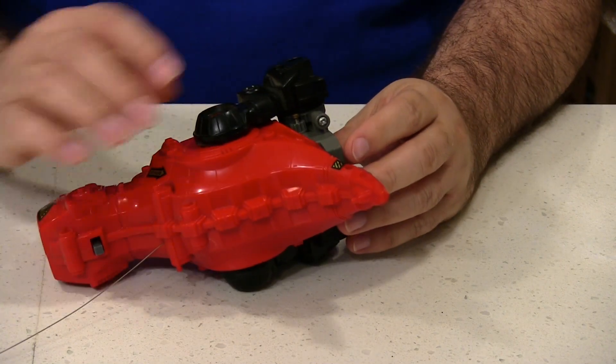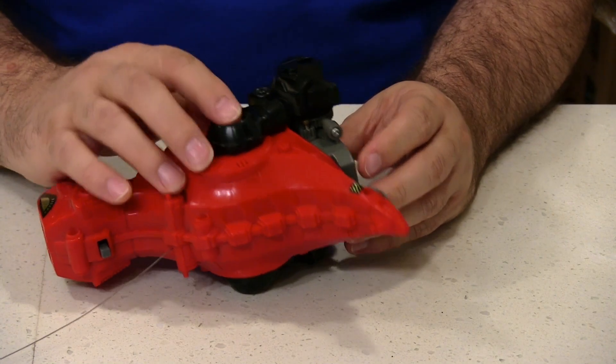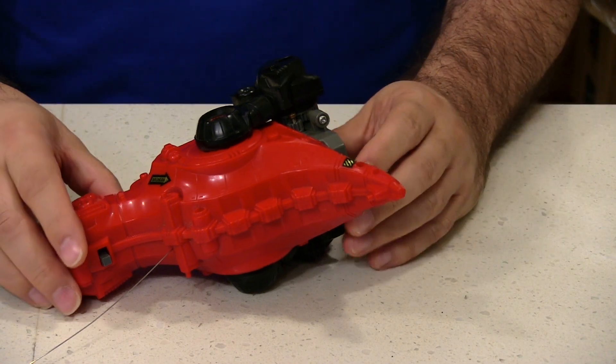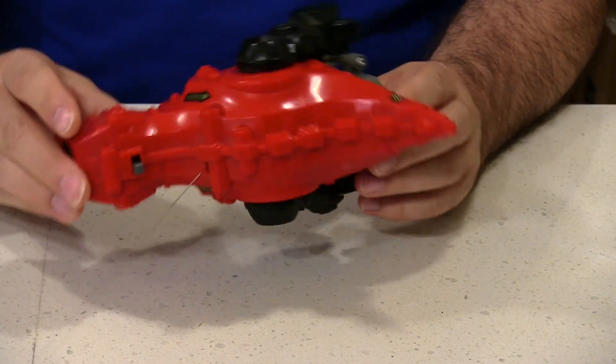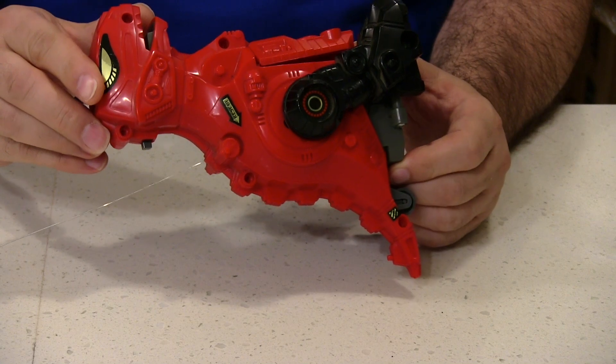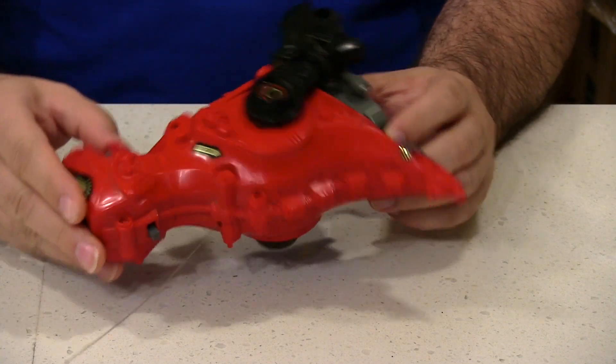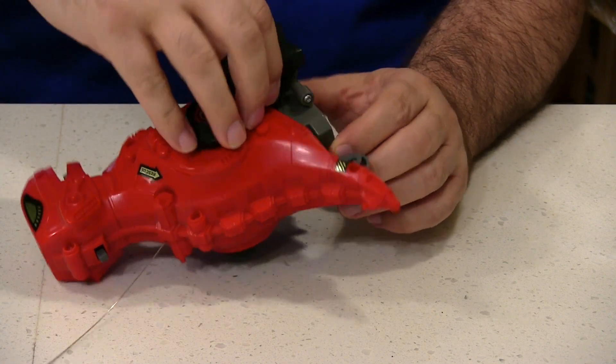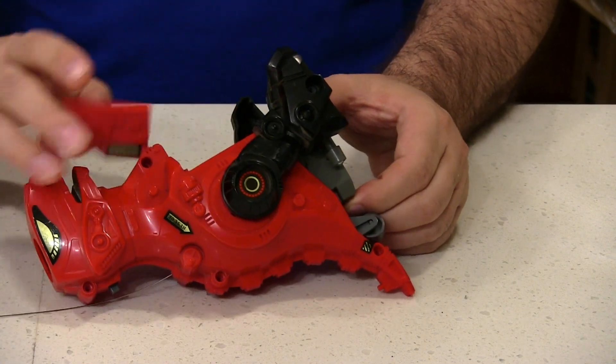So anyway, I also peeled back one of these stickers on the side here and there is no screw under there. So not 100% sure how those come off. They may just be pressed on, but we will see.